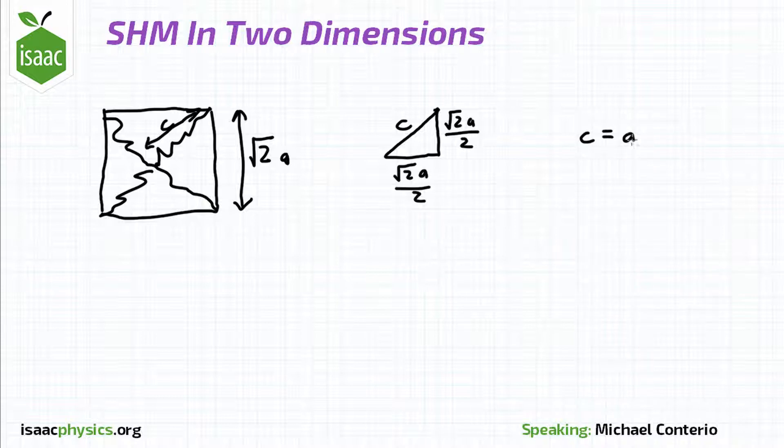Now let's look at the situation when the mass is displaced towards one of the corners by distance d. There are four forces acting on it due to the tension in each of the springs.